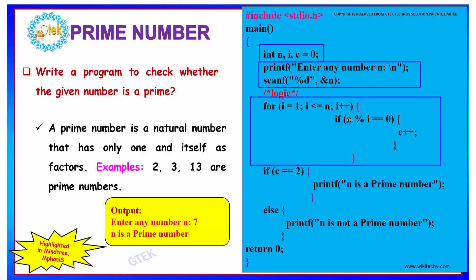We are dividing the number, say 7, with each and every value of i which is less than or equal to 7.